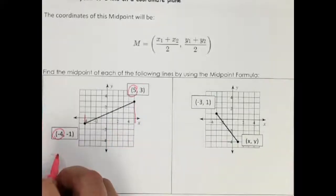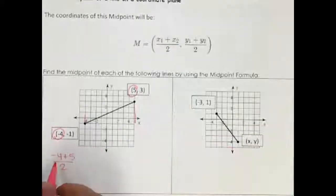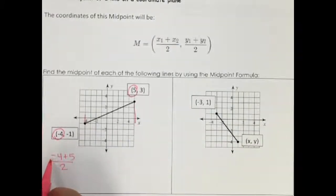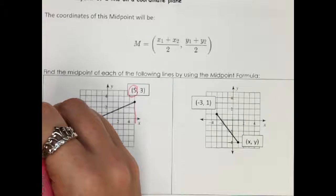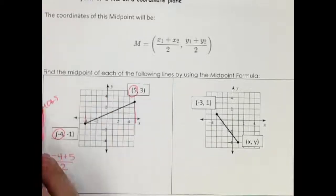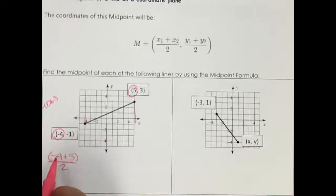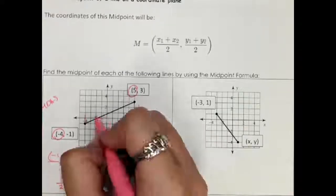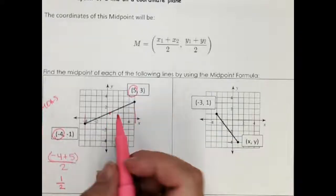So that looks like negative four plus five over two. That's this part. And then I just have to use my order of operations, please excuse my dear Aunt Sally. So I need to add the top part before I divide because this big line here is like parentheses for the top part. Negative four plus five is one, so this gives us one half. So it's right here at one half in the middle.